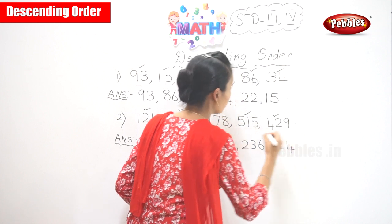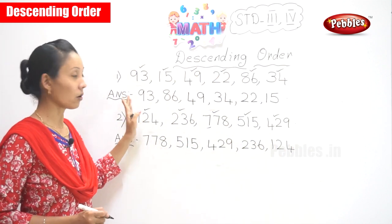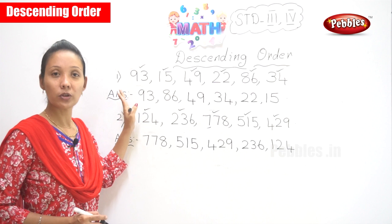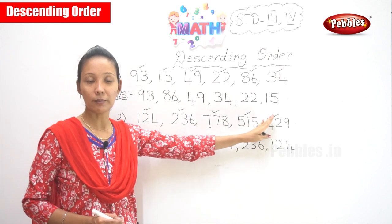So children, did you follow this descending order? Descending order is from your greater number to your smaller number.